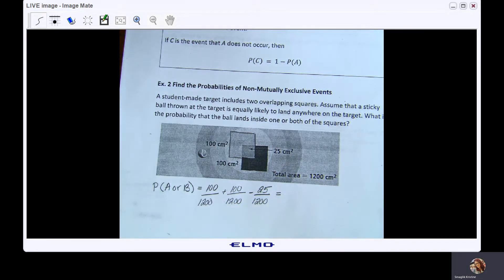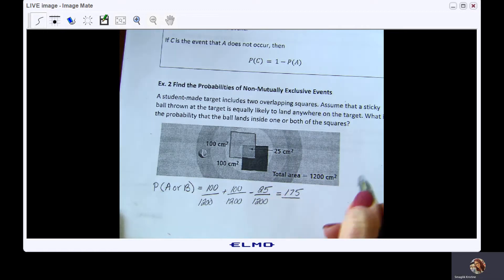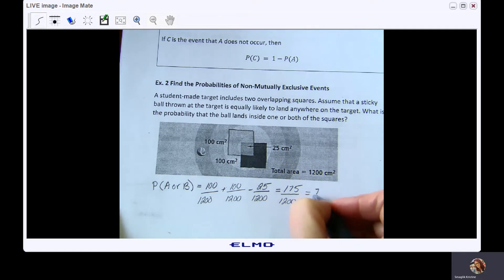That is going to leave me with 175 over 1200. And if I reduce that fraction down, it is 7 over 48.